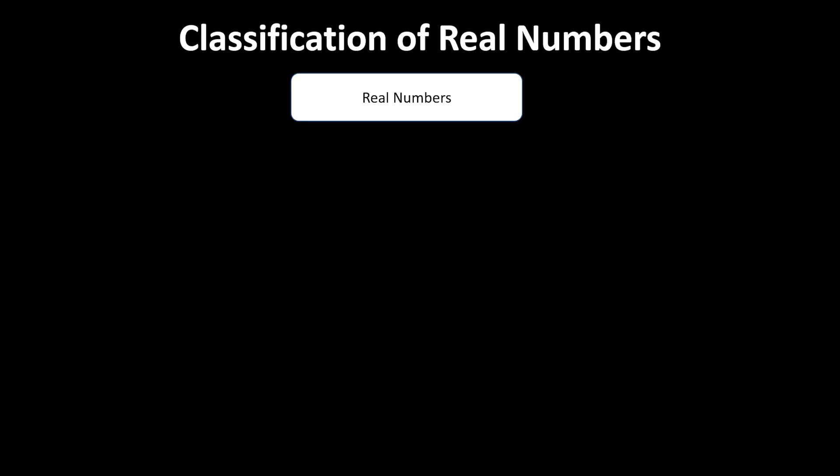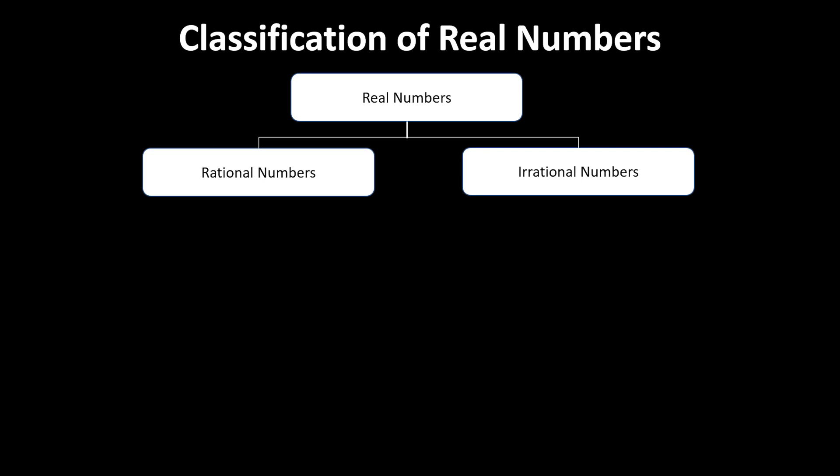Real numbers can be further classified as rational numbers and irrational numbers — it is the union of rational numbers and irrational numbers. Rational numbers are numbers which can be written in the form of p/q, where q should not be equal to 0. If you write a number as numerator upon denominator and the denominator is never equal to 0, we call such numbers rational numbers. For example, 3/4.